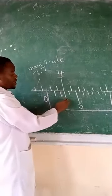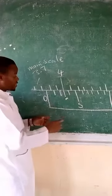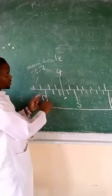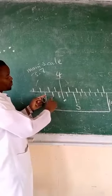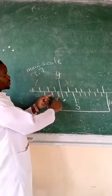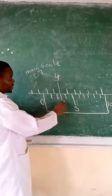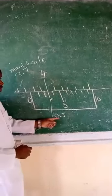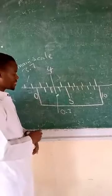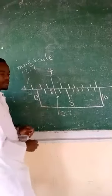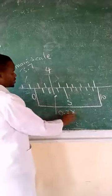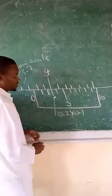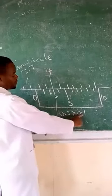So now what's the reading? So we start from here: 0.1, 0.2, 0.3. So the reading on the vernier scale is 0.3, but this one has to be multiplied by the precision accuracy of the vernier scale, which is 0.1. So when you multiply 0.3 by 0.1, you will have 0.03.